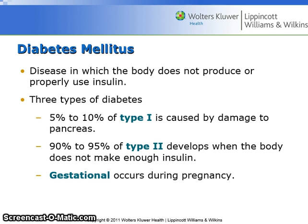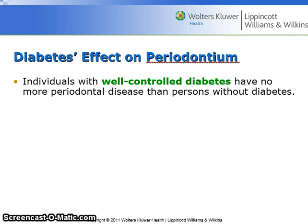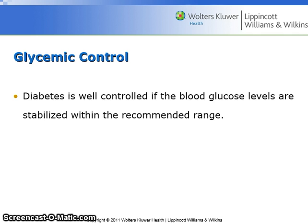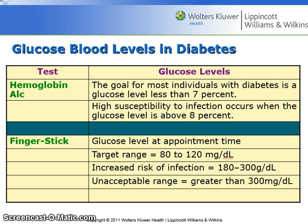Type 1 is caused by damage to the pancreas, Type 2 develops when the body does not make enough insulin, and gestational occurs during pregnancy. Individuals with well-controlled diabetes have no more periodontal disease than persons without diabetes. Diabetes is well controlled if the blood glucose levels are stabilized within the recommended range. Glucose blood levels in diabetes are monitored by the hemoglobin A1c test or finger stick.